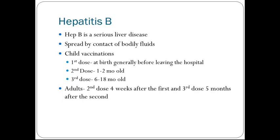Hepatitis B is a serious liver disease spread by contact with bodily fluids. For children, the first dose is usually given at birth, generally before the child leaves the hospital. The second dose is at one to two months old, and the third dose is at six to 18 months old. In adults who have not received the hepatitis B series, the second dose is given four weeks after the first, and the third dose is given five months after the second dose.